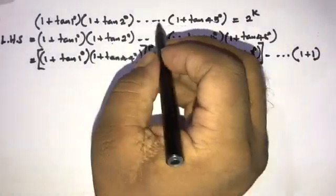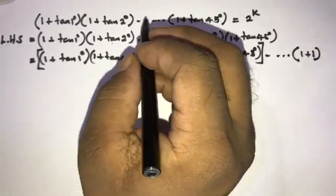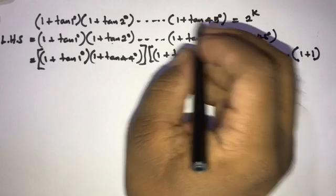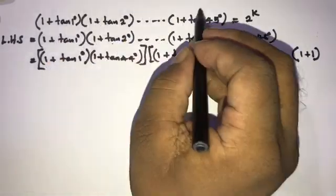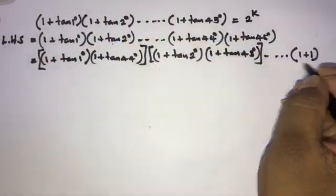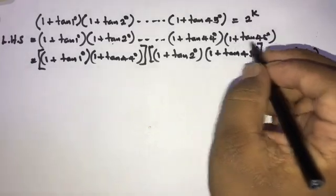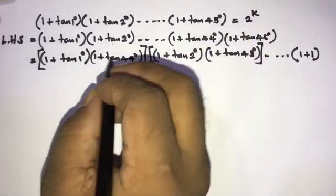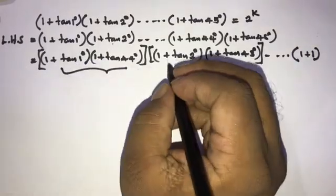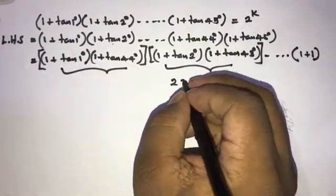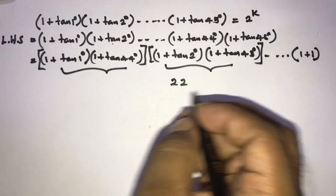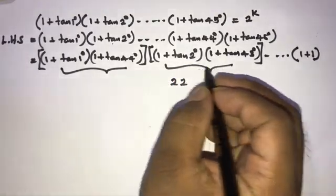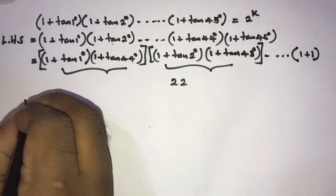We have 45 terms total. After pairing, we set aside the last term (1 + tan45), leaving 44 terms. Dividing 44 by 2, we now have 22 pairs.